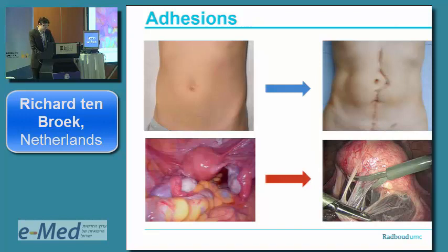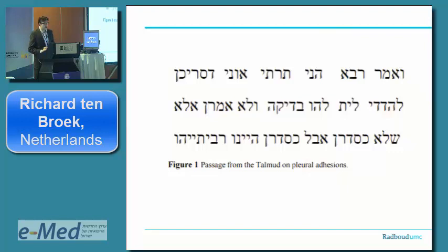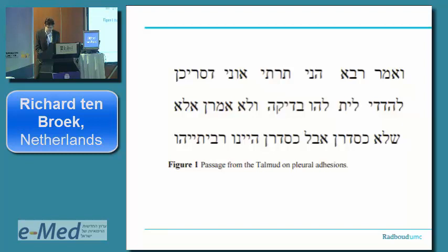Today we are in Jerusalem, and this is basically the oldest reference in human literature to adhesions as a response to tissue injury. This is from the Talmud. It says that when you look for an animal to determine if it's kosher to eat, you can look to pleural adhesions to see if it hasn't been attacked before. This is the oldest reference to adhesions that I can find.